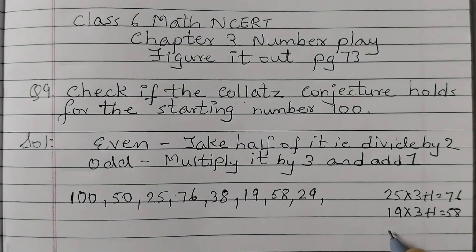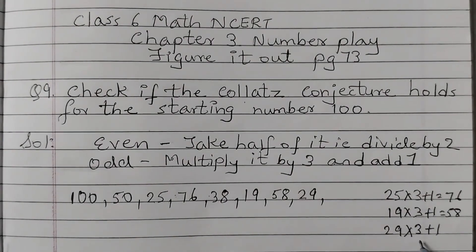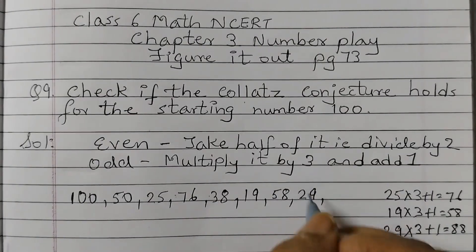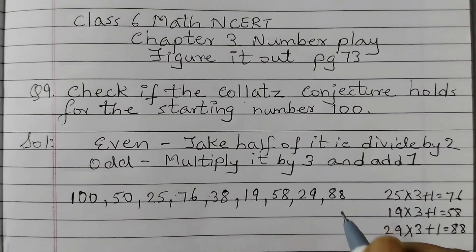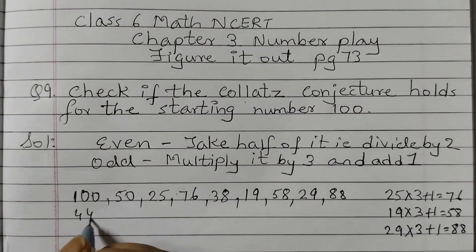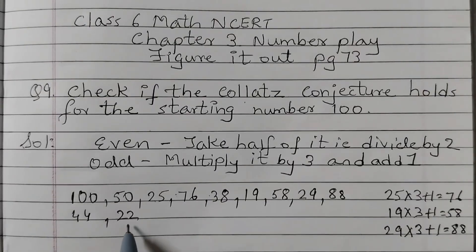29 is odd number. So 29 into 3 plus 1, and that would be 88. 88 is even number, so that would be 44. Take half of it. 44 even number divide by 2, 22.